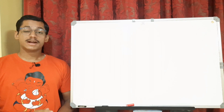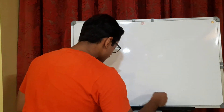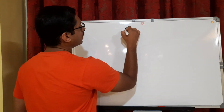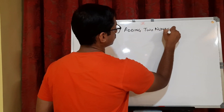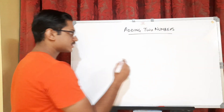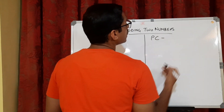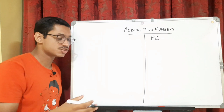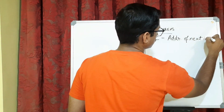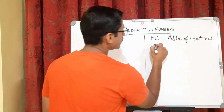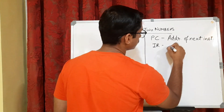Hello students, I am Ayishwattacharya. Now we will see how to add two numbers in a computer. The program counter, also known as PC, stores the address of the next instruction. The instruction register stores the instruction that is currently to be executed.